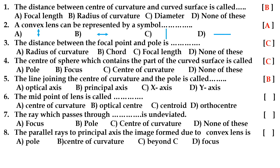Fifth question: the line joining the center of curvature and the pole is called — option B, principal axis. Sixth question: the midpoint of the lens is called — option B, optical center or optic center. Seventh question: the ray which passes through the pole is undeviated — option B, pole.